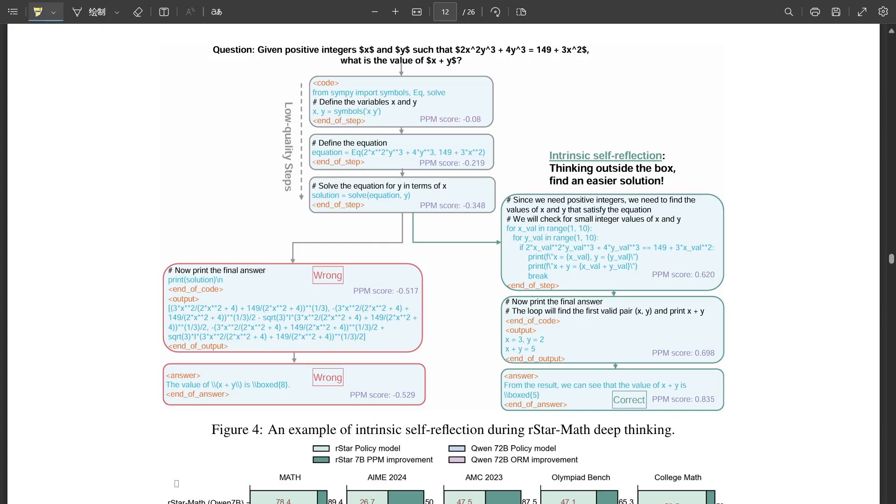That's remarkable. It's like the AI had this mini eureka moment, realizing it needed to adjust its approach. Exactly. And this self-reflection ability really highlights one of the key advantages of R-Star Math. It's not just about reaching the right answer, it's about understanding the process and being able to course correct when necessary. It's like having a built-in error detection system for math problem solving. Now, what about those instances where the PPM guided the AI towards using specific theorems? Can you give me an example of that?